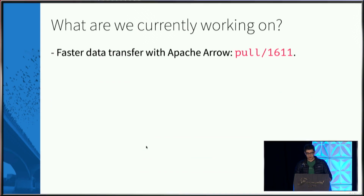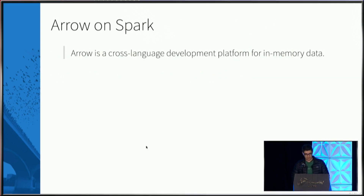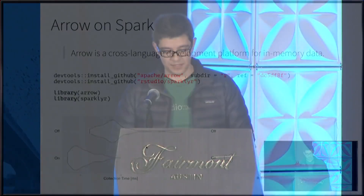What are we currently working on? Two big features: support for Apache Arrow and XGBoost on Spark. Apache Arrow is a cross-language development platform for in-memory data. Really, in an ideal world you don't even need to know what Arrow is — we just want to make things faster. You should be able to include the Arrow library and sparklyR and automatically get performance improvements.